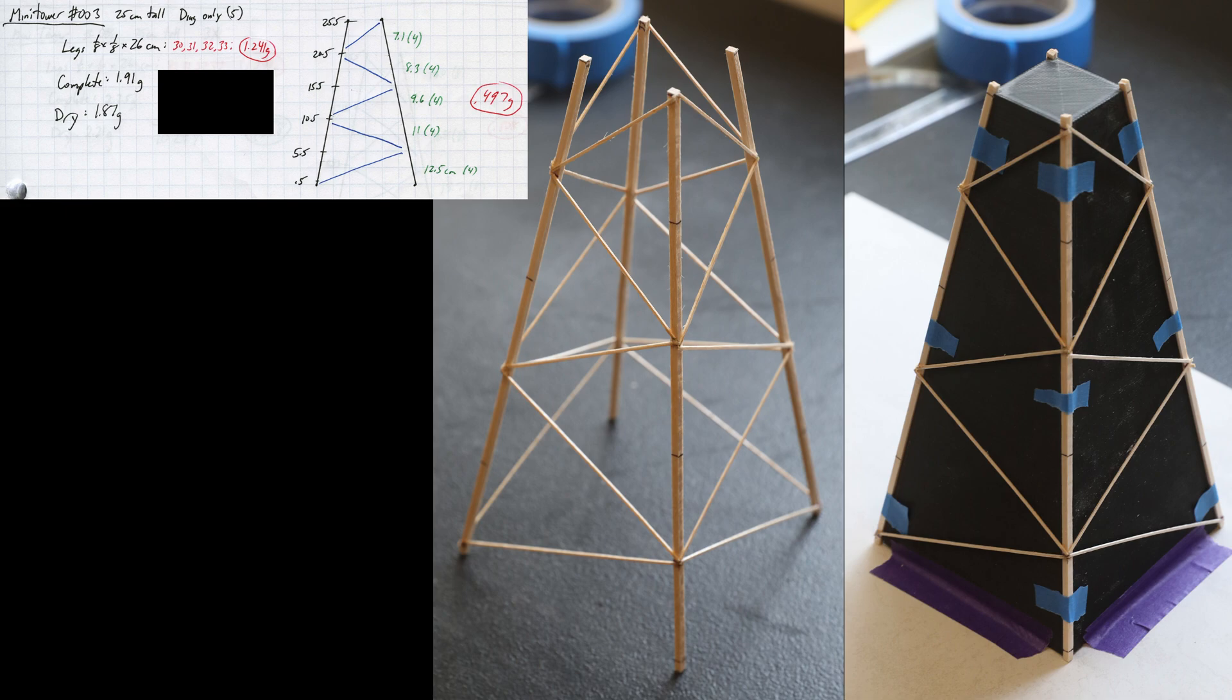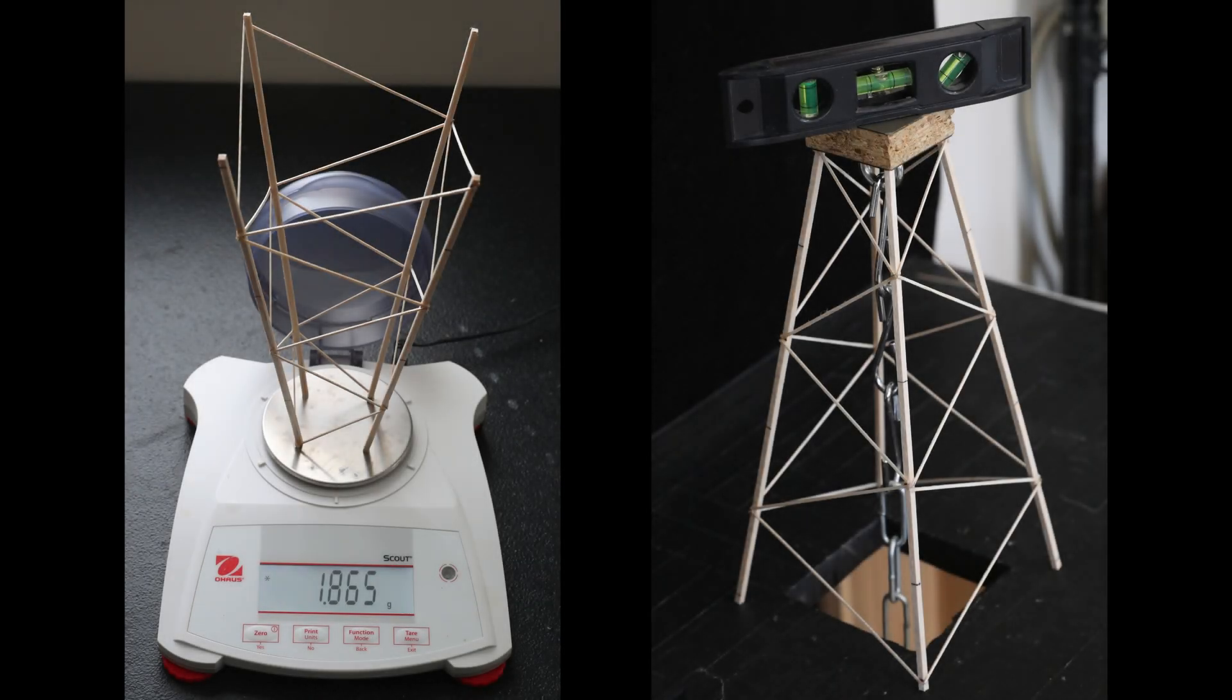You can see from my notebook page that the final mass of 1.87 grams is almost identical to tower number 1, but I predict the performance will be much better. Here is the tower being weighed just before testing and again you can see that the build is almost perfectly level. The 3D printed jig really helps with these tower builds and I'm sure it will be important to have something similar when we build the real towers for next season.